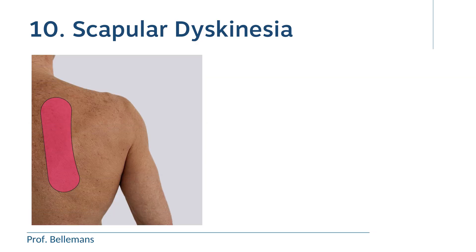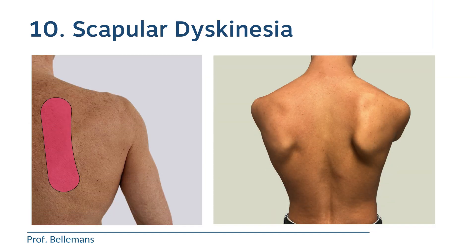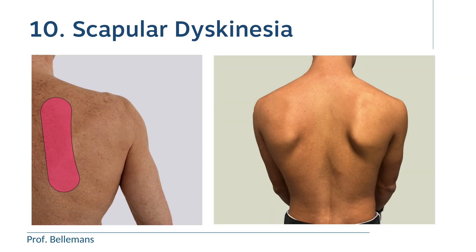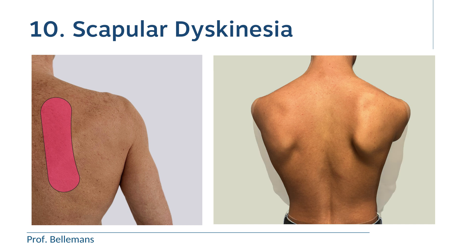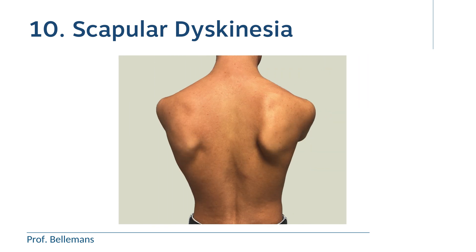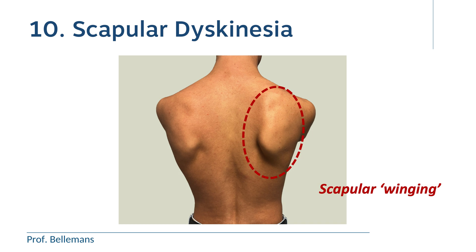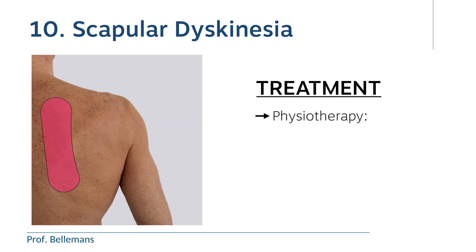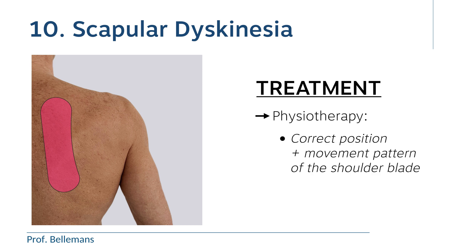Number ten: scapular dyskinesia. In scapular dyskinesia, the shoulder blade does not move as it should, usually because of an imbalance of the muscles that stabilize the shoulder blade. As a result, the scapula takes an abnormal position, which we call scapular winging. Treatment consists of physiotherapy with exercises to correct the position and movement pattern of the shoulder blade.